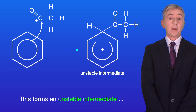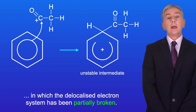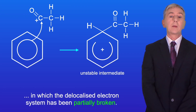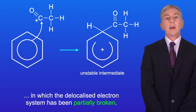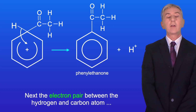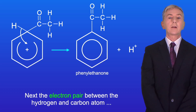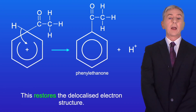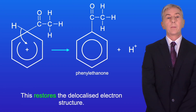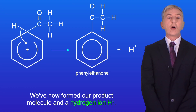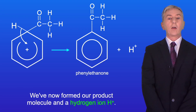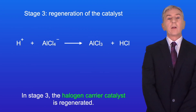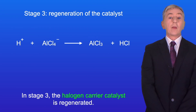This forms an unstable intermediate in which the delocalized electron system has been partially broken. Next, the electron pair between the hydrogen and carbon atom moves down into the delocalized electron system of the benzene ring, and this restores the delocalized electron structure. We've now formed our product molecule and a hydrogen ion H+. In stage three the halogen carrier catalyst is regenerated.